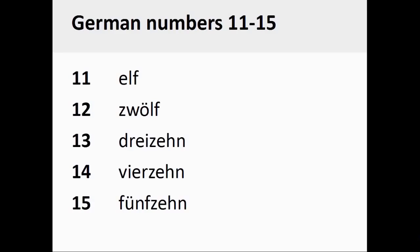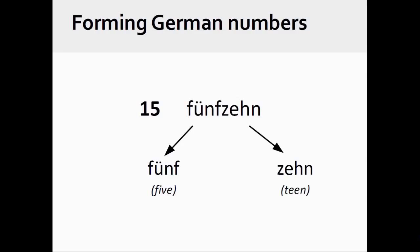The German numbers 11 through 15 are pronounced elf, zwölf, dreizehn, vierzehn, fünfzehn. Again, these numbers are formed in a manner that is similar to English.